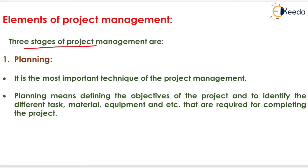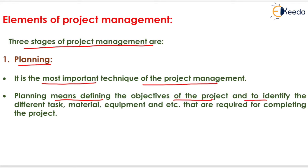Three stages of project management are: the first one is planning. It is the most important technique of project management. Planning means defining the objective of the project and identifying the different tasks, materials, and equipment required for completing the project. All the equipment and material that will be used in the project should be planned in this planning process.